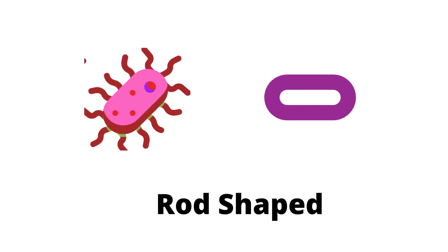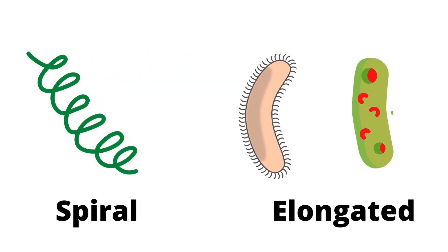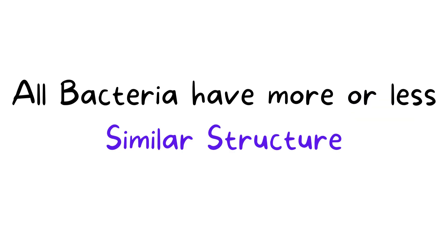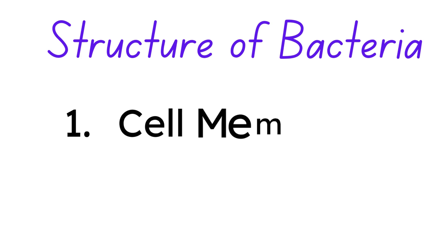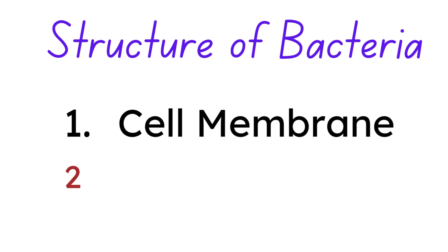Some bacteria are spiral and elongated in shape, but the basic structure of all bacteria is more or less similar. They have two important components: first is the cell membrane, and second is the cell wall.